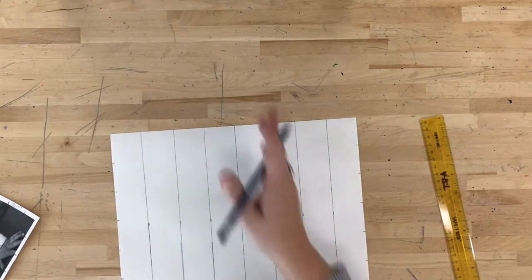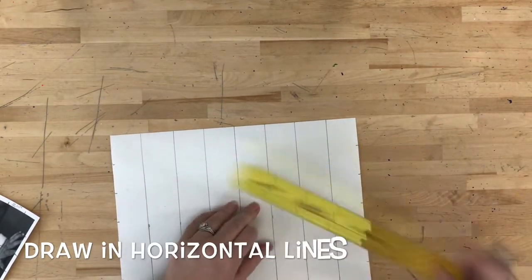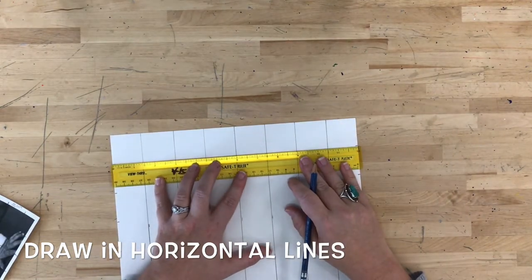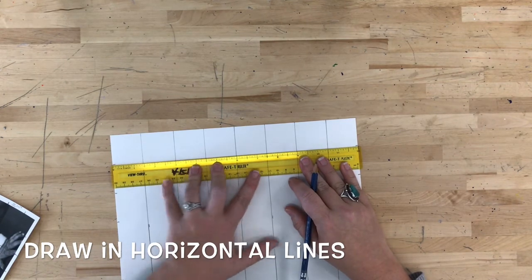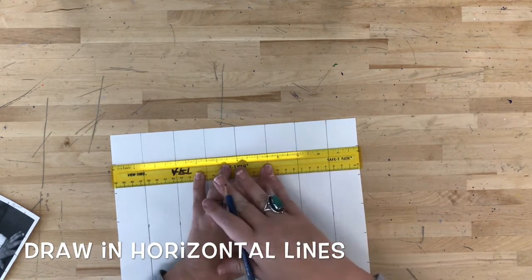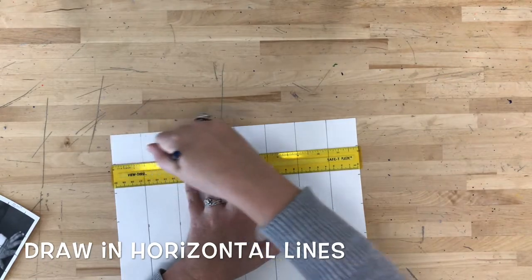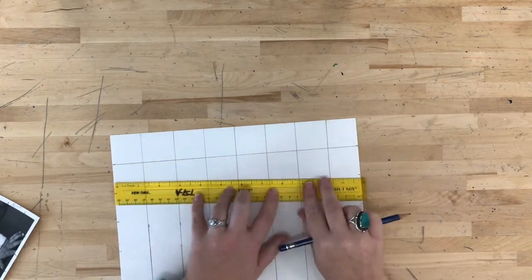Now that I have marks on the left and the right, just like I did with my vertical lines, I need to connect my lines horizontally. So I'm lining up both points, putting my hand in the middle of my ruler so it doesn't move, and I'm drawing my lines.